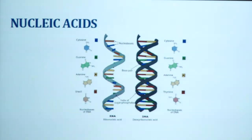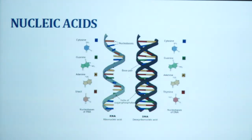These are the structures of Nucleic Acids. We have two types of Nucleic Acids: DNA, that is deoxyribonucleic acid, and the second is RNA, ribonucleic acid.